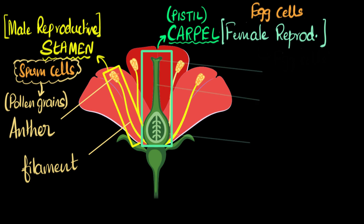Let's do the female parts now. The female reproductive part, the carpel or the pistil, can be further divided into three major parts. The topmost part is called the stigma. The part below, a long structure, is called the style. And this structure is what we call the ovary.